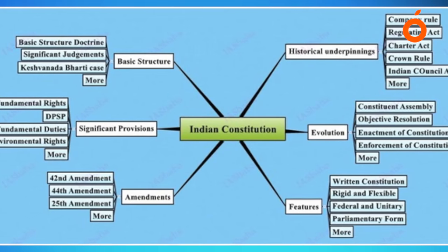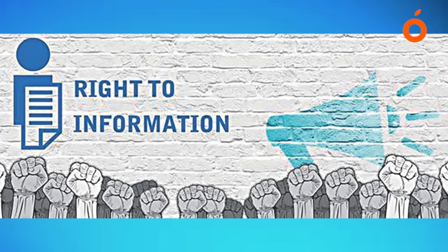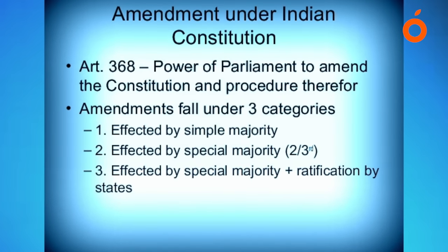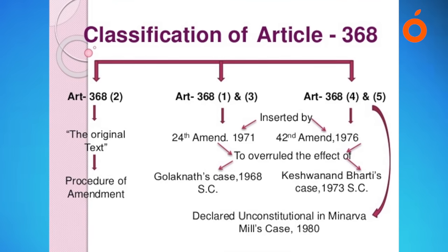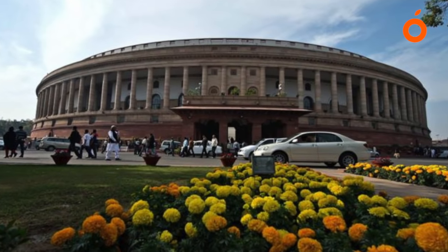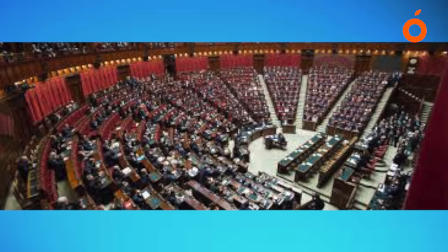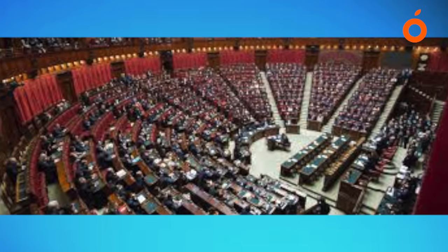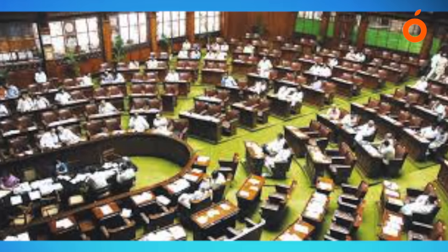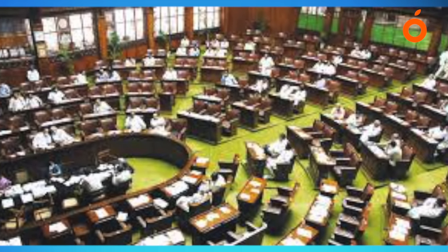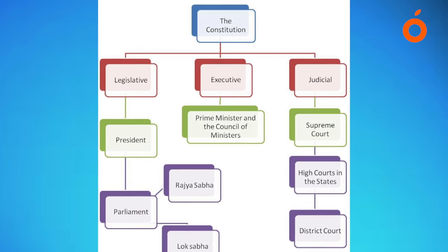The majority of provisions in the constitution need to be amended by a special majority of the parliament, that is a majority of more than 50 percent of total membership of each house and a majority of two-thirds of the members of each house present and voting. The expression 'total membership' means the total number of members comprising the house, irrespective of whether there are vacancies or absentees. The special majority is required at the third reading stage of the bill, but by way of abundant caution the requirement of special majority has been provided in the rules of the house in respect of all effective stages of the bill.